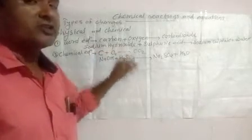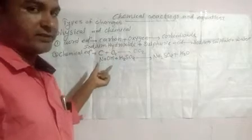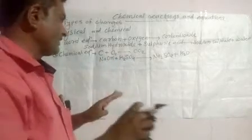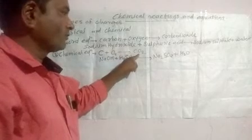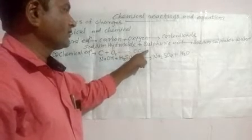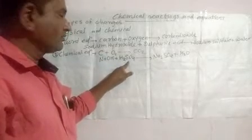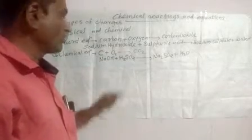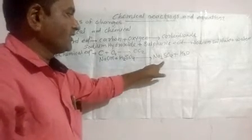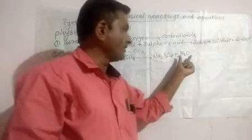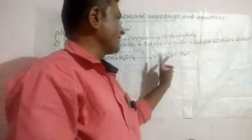Between reactants and products, we write an arrow, which indicates the direction of the chemical reaction. When two or more reactants are present, they are separated by a plus sign. Here, carbon and oxygen are two reactants, so we use a plus sign. Similarly, Sodium Hydroxide and Sulphuric Acid are two separate reactants linked with a plus sign. When there are two products like Sodium Sulphate and Water, they are also separated by a plus sign.